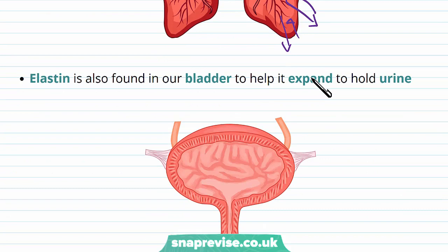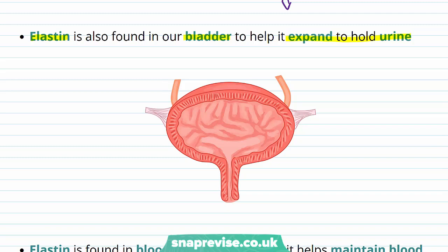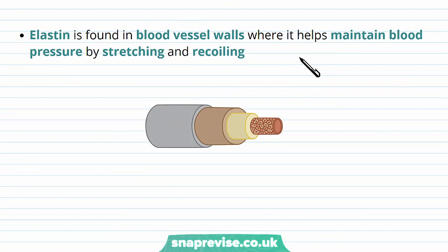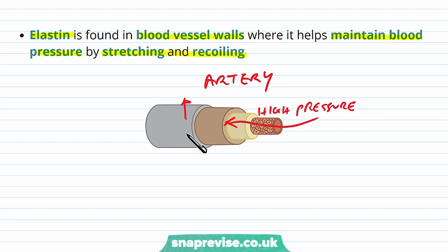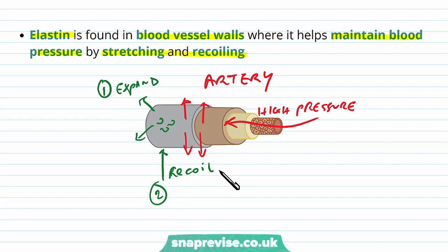Elastin is also found in the bladder to help it expand when holding urine. The bladder is usually quite small but as it fills it needs to expand, so elastin in its walls allows it to stretch and recoil when it empties. Finally, elastin is found in blood vessel walls alongside collagen, where it helps maintain blood pressure by stretching and recoiling. When blood enters the artery at high pressure it pushes against the wall; the elastin allows expansion, and as pressure drops it recoils, helping to squeeze blood onward.